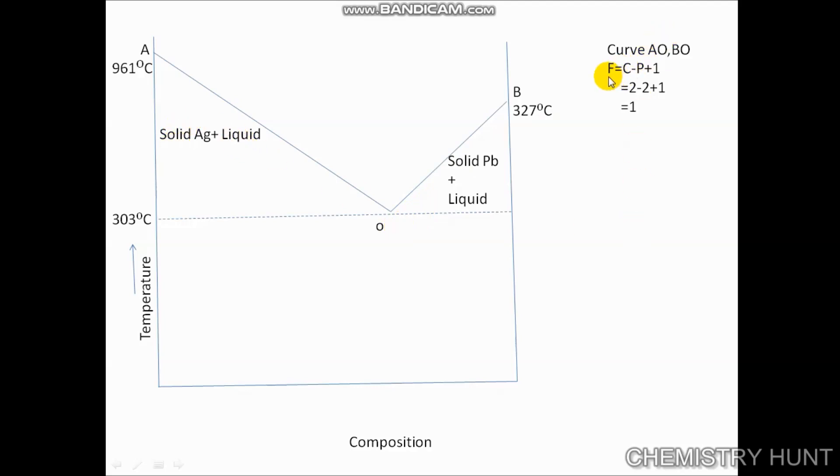Here we see that F = C - P + 1, where the components are 2. For the solid silver with lead and for BO, we see solid lead with silver. The components are 2 and the phases are also 2: one solid phase and one liquid phase. So F = C - P + 1 = 2 - 2 + 1 = 1. The degree of freedom is 1, so it is univariant.